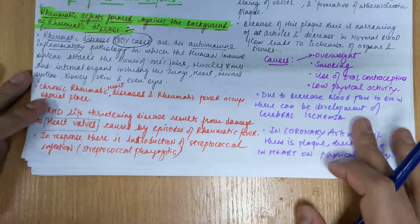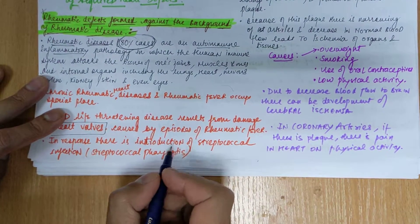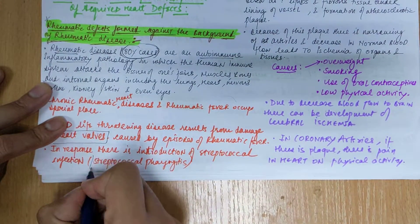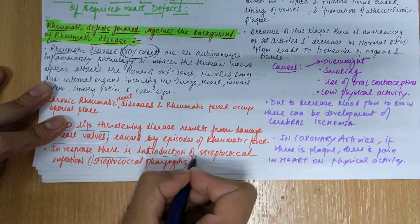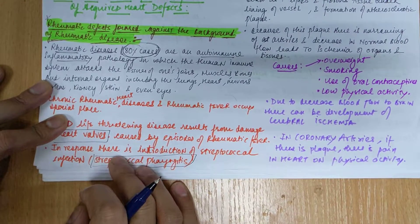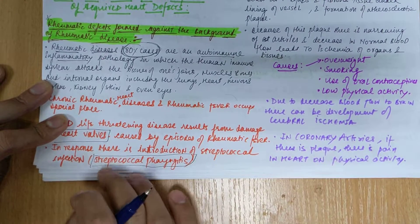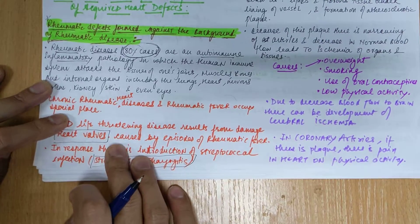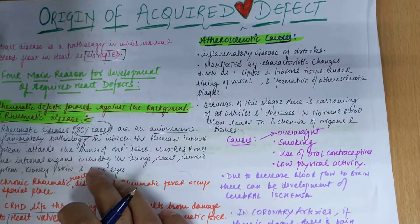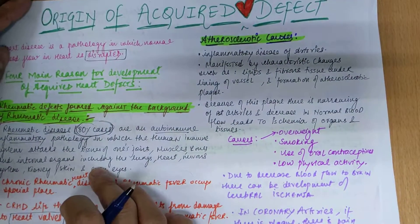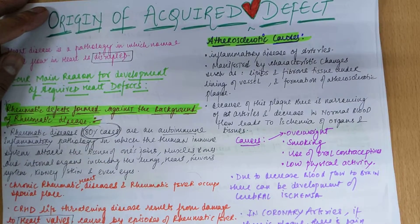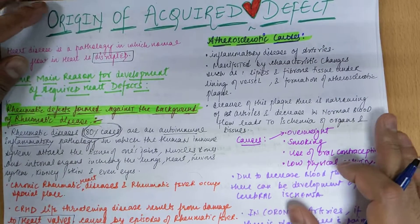In response to this, there is an introduction of infection called streptococcal pharyngitis — infections in the upper respiratory tract. Essentially, rheumatic heart disease leads to the development of valvular diseases.